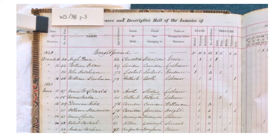This volume runs right up into the 20th century, so it's one of the most detailed records we have of patients in the asylum. We're just going to focus on the first 100 patients, but there's obviously potential to continue the project and record information about more patients. There's a lot of additional information in this volume that we can add to the information we've already recorded.